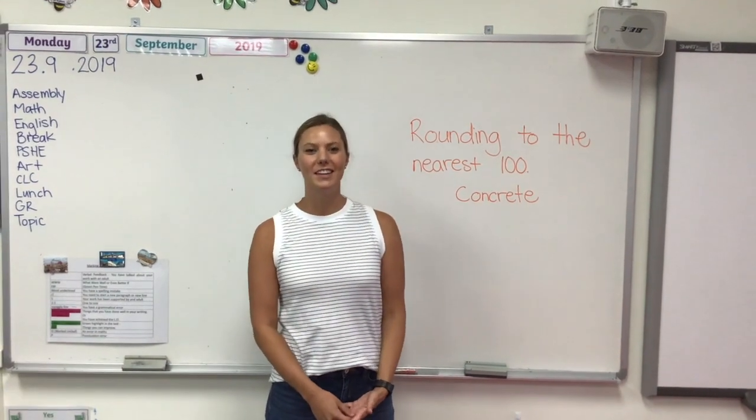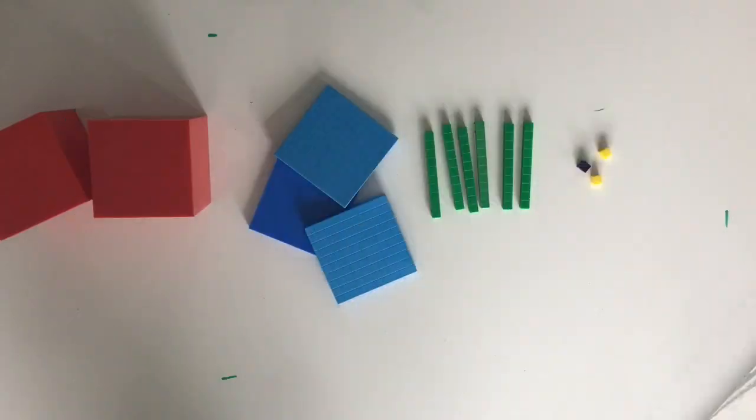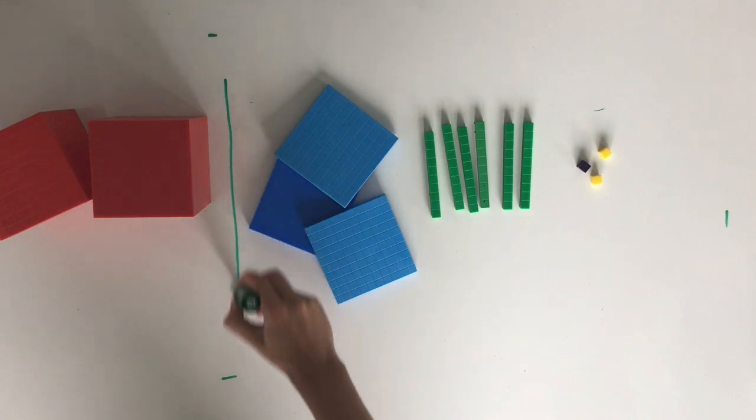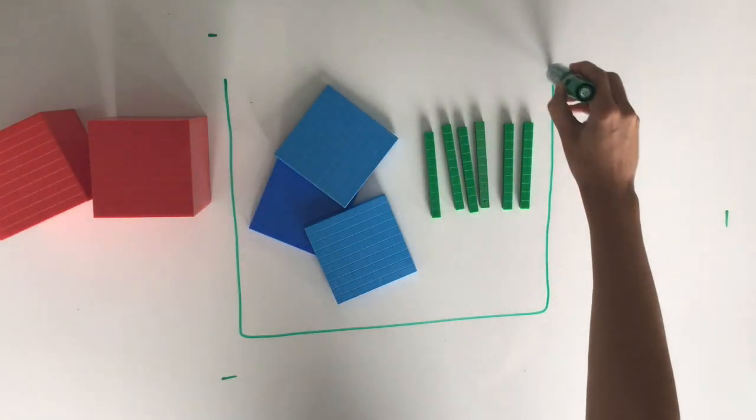Hey everybody, today we're going to be rounding to the nearest hundred in a concrete way. We have 2,363. Because we're rounding to the nearest hundred, we're looking only at our hundreds and tens.